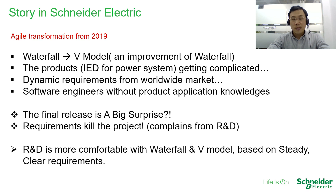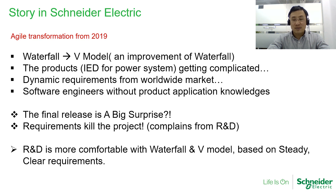Software engineers are usually not familiar with the related application knowledge. We expected that customer involvement could help the project deliver a qualified product. But in the previous process model, we usually got a big surprise when seeing the final release product — more or less, the release product was not the same as our expectation. Sometimes we could not get the final release product because the requirements were not clear and kept growing. We received complaints from R&D that the requirements were killing the project.